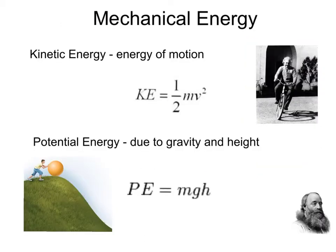One classification of energy is mechanical energy. There are two types of mechanical energy. The first type is kinetic energy — that is the energy of motion. As you see Einstein pedaling his bicycle, he has kinetic energy because he has mass and, more importantly, velocity.